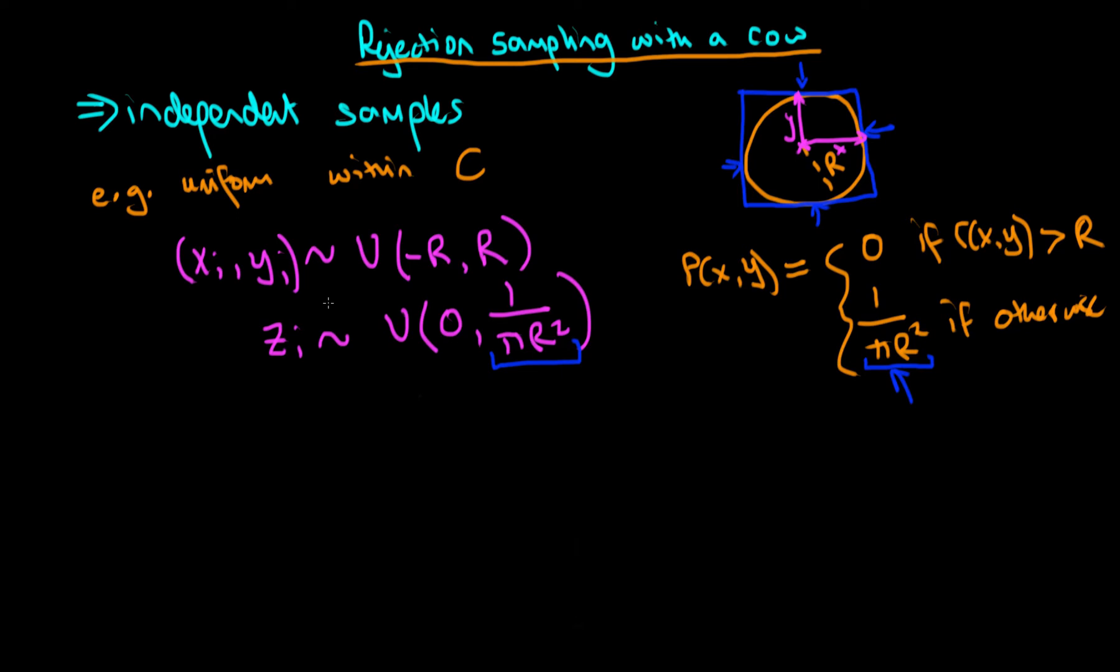The idea is that in each iteration of our algorithm we firstly independently sample some xi and some yi by independently sampling from a uniform distribution between minus r and r. Then we independently sample some zi from a uniform distribution between 0 and 1 over pi r squared.